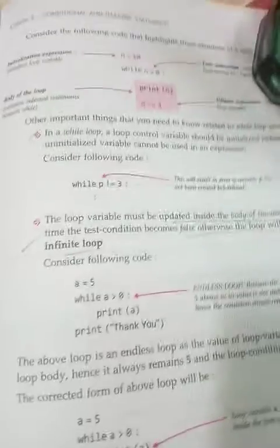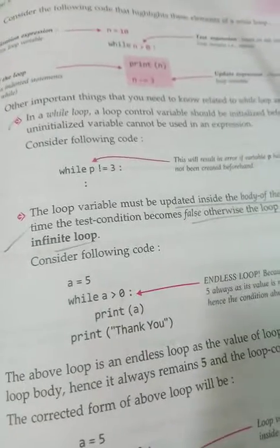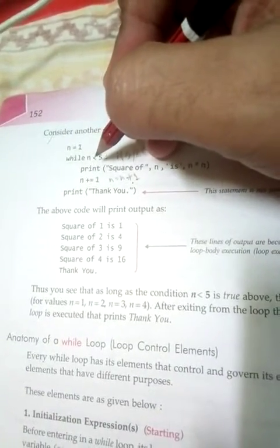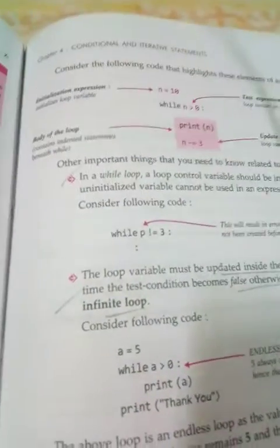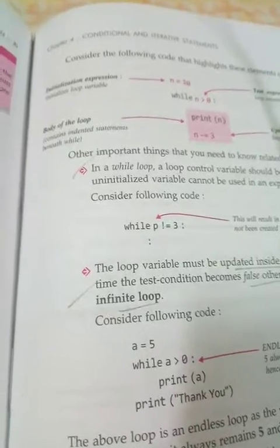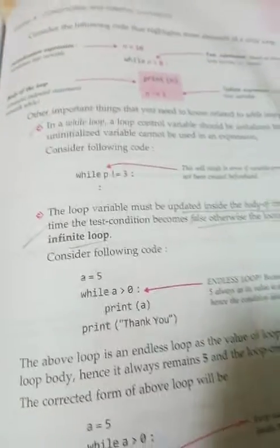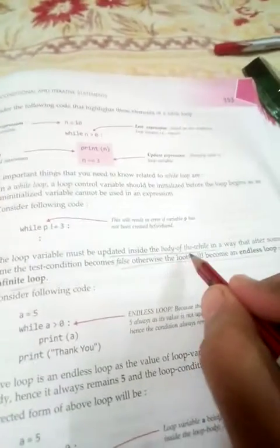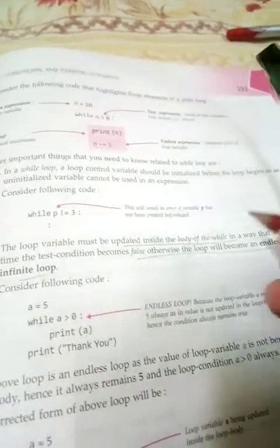There are two important things to keep in mind about while loops. First, you must define your loop variable and give it some value. If you only write n less than 5 without defining n's value, you will get an error. So you must initialize the loop variable — it can be any character: a, b, c, d — that is your choice. Second, you must update your loop variable value inside the body of the while loop.